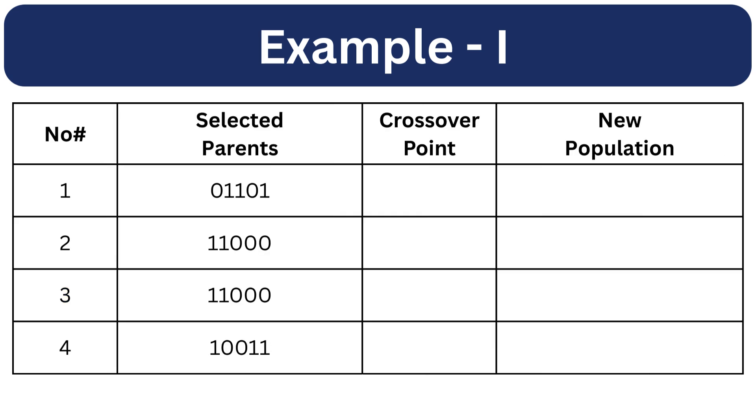Now we will apply crossover to the selected parents. A random crossover point will be chosen for each pair of selected parents. Let's say these are the crossover points. After applying crossover, we will get 4 new offspring.